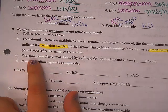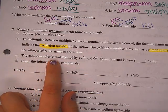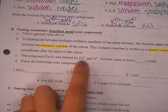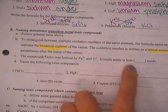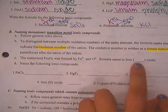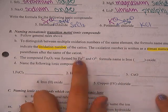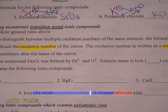For example, if I'm looking at the compound Fe₂O₃, I can tell that it was formed by the Fe³⁺ ion and the O²⁻ ion, which tells me the formula name is iron blank oxide. What would the Roman numeral be if it has a 3+ charge? Roman numeral 3.